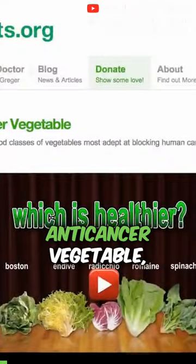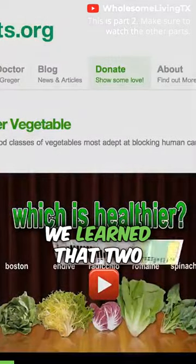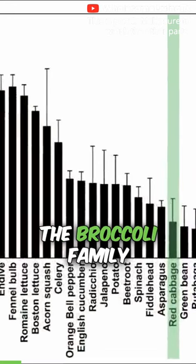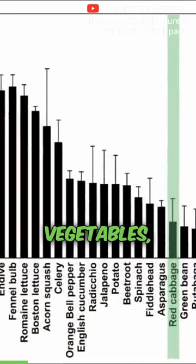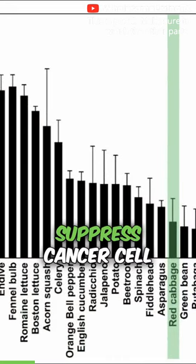In my video number one anti-cancer vegetable, we learned that two classes of vegetables, the broccoli family vegetables and the garlic family vegetables, most effectively suppress cancer cell growth.